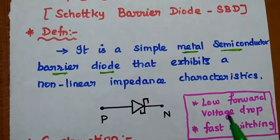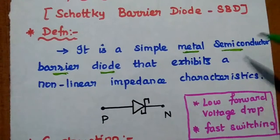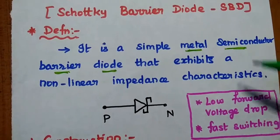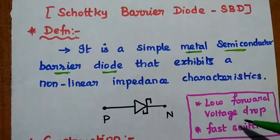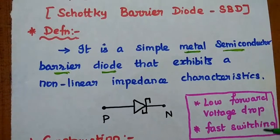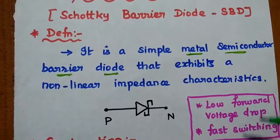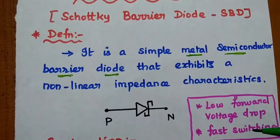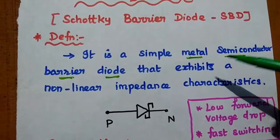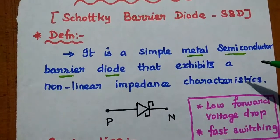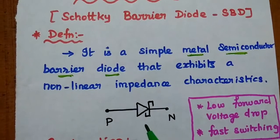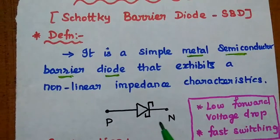There are two important features of this metal-semiconductor junction. One is low forward voltage drop. Another one is fast switching speed. These two features are available with this metal-semiconductor junction. So this is the symbol of Schottky barrier diode.